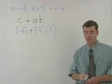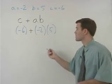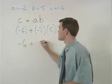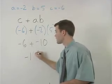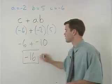So the next step is to multiply negative 2 times 5 to get negative 10. So we have negative 6 plus negative 10. And that simplifies to negative 16.